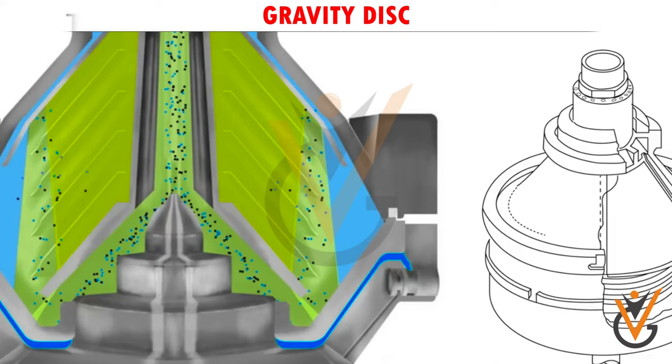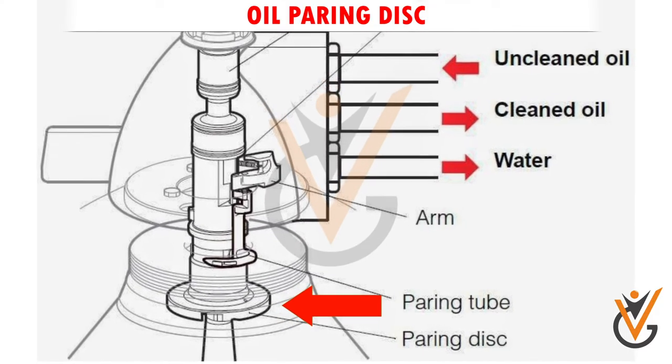Gravity disc: The main component of purifier is correct size gravity disc or dam ring which is responsible for maintaining an interface between oil and water. Gravity disc is fitted at the heavy phase outlet, water outlet.